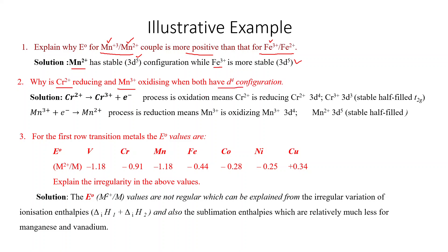For Fe3+/Fe2+, E° is less positive, meaning Fe3+ is more stable. Now, why is Cr2+ reducing and Mn3+ oxidizing when both have a d⁴ configuration? When Cr2+ loses an electron it converts to Cr3+ — this is oxidation, so Cr2+ is reducing. Cr2+ (3d⁴) converting to Cr3+ (3d³) is favorable because the half-filled T2g (3d³) configuration is more stable. Mn3+ gains an electron to form Mn2+, which has the stable 3d⁵ half-filled configuration, so Mn3+ is oxidizing.